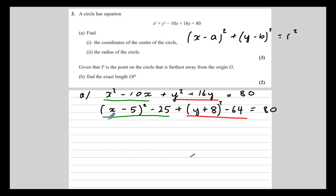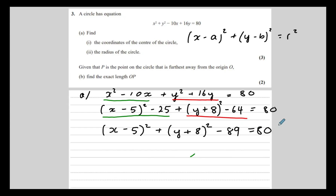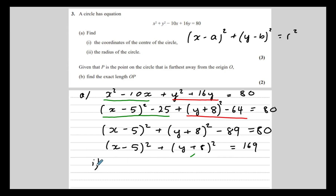Now I can put it in the right form: x minus 5 squared plus y plus 8 squared, and I've got minus 25 and minus 64, which makes minus 89. That equals 80, so I'm going to add 89 to both sides, giving me 80 plus 89, which is 169.